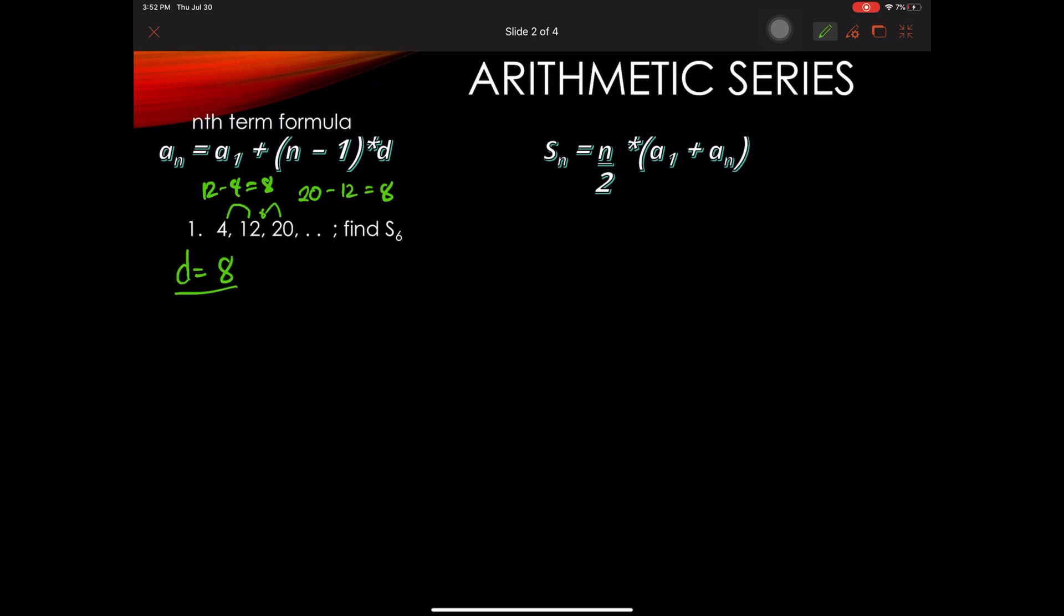Since we need the last term to find the sum of all the terms of an arithmetic sequence, we need to find A sub 6. And to find A sub 6, we use the nth term formula we discussed on the previous video.